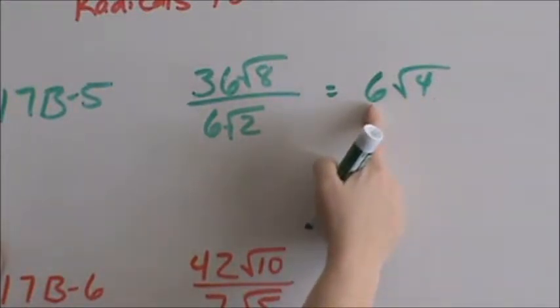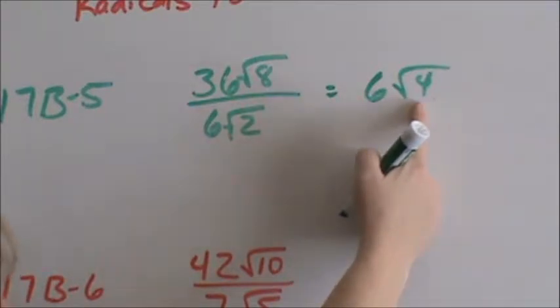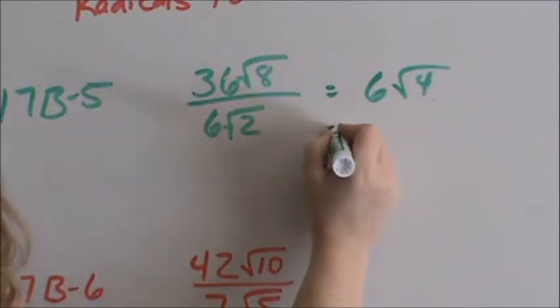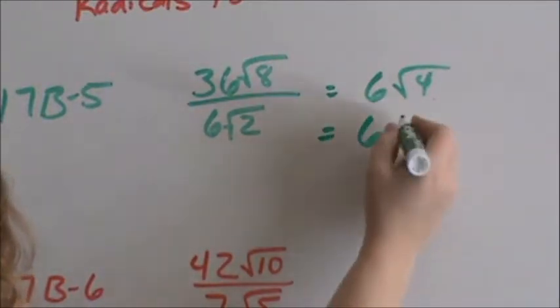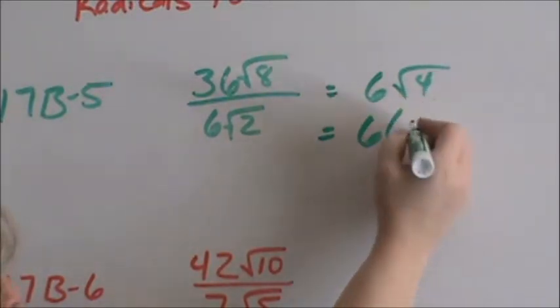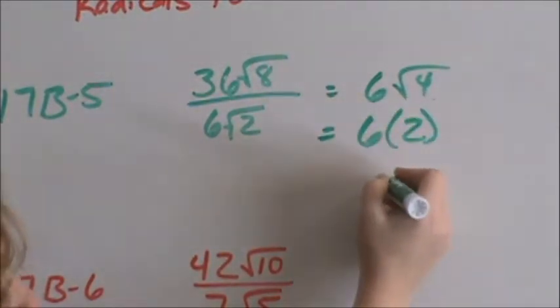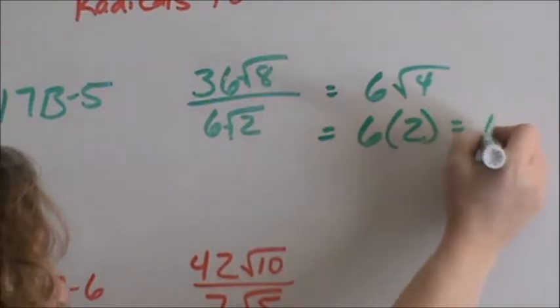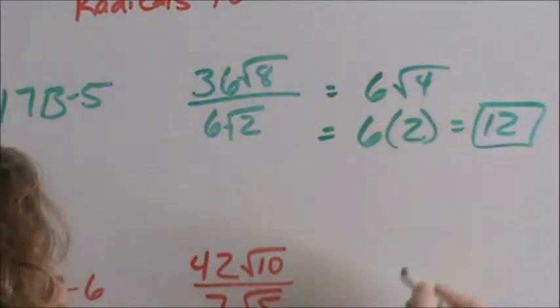So this does mean 6 times square root of 4. So this would be 6 times, and then the square root of 4 is 2. And then 6 times 2 is 12. And that is your final answer.